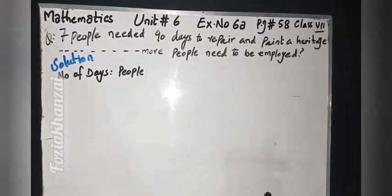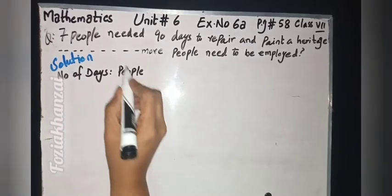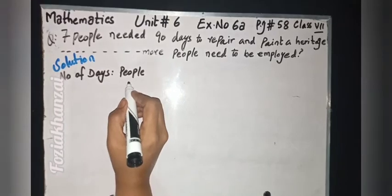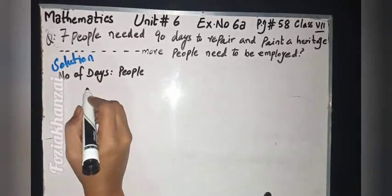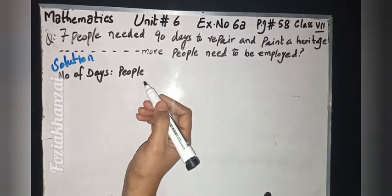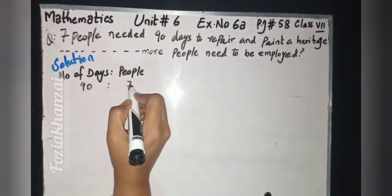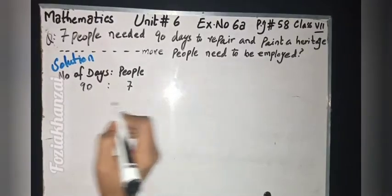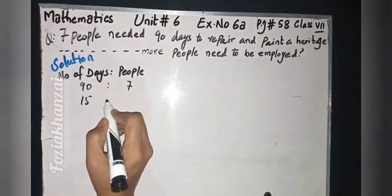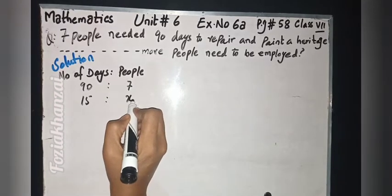We set up a table: number of people is seven, number of days is 90. It is up to you whether you write people first or number of days first. In the first part, 90 days corresponds to 7 people. If the job should be completed in 15 days, we need to find the number of people.